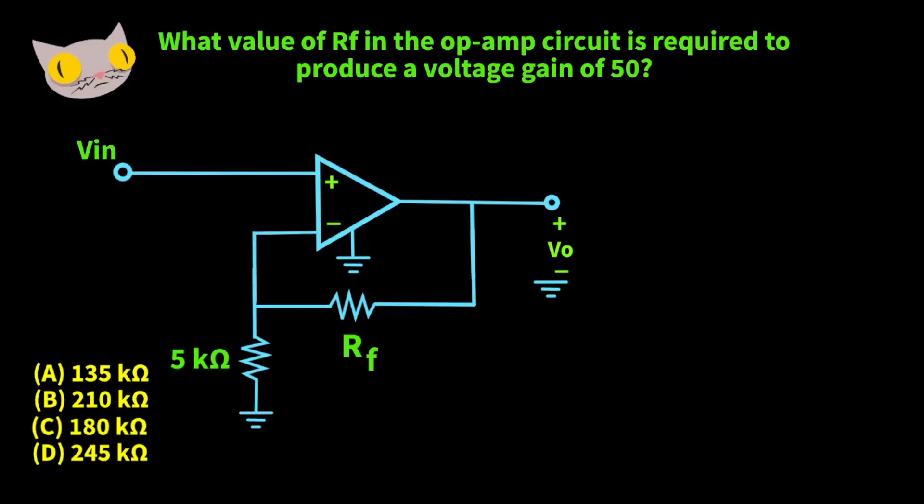In this video we're going to do a few problems having to do with operational amplifiers. So for this first one we want to find the value of RF that is required to produce a voltage gain of 50.